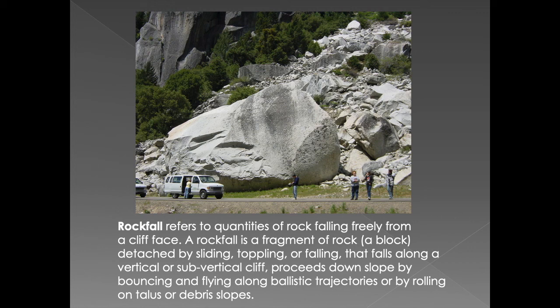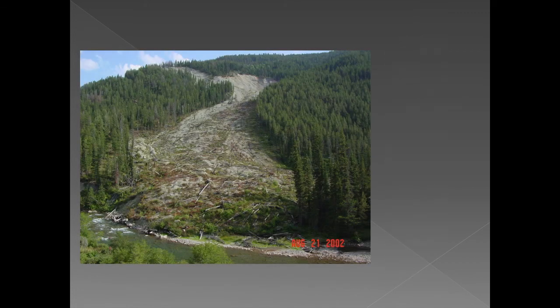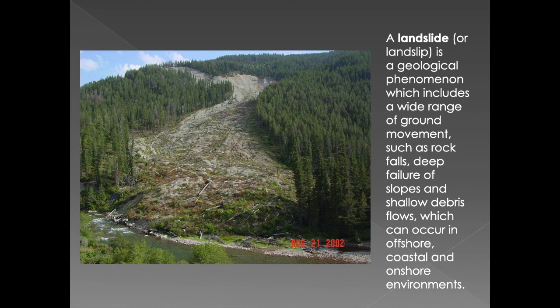Here we're seeing an example of landslides or landslip, which can happen for various reasons. It could be that the soil becomes supersaturated, or it could occur where we get earthquakes. In this case, it might have been that the ground became supersaturated and the soil was loosened from its parent material and then rushed forward as a debris avalanche.